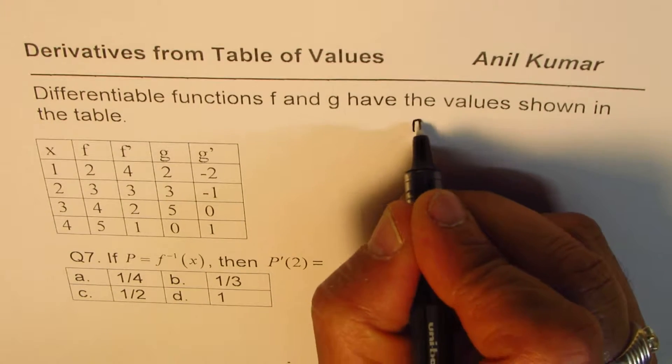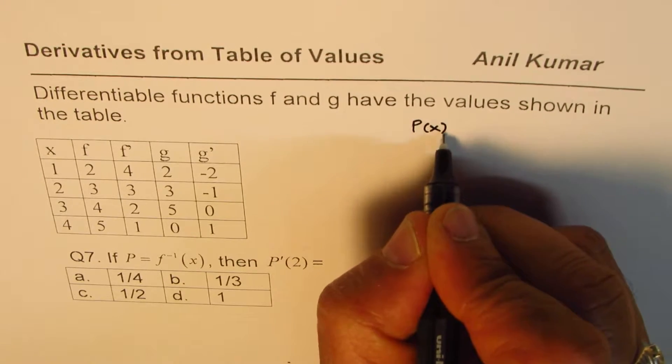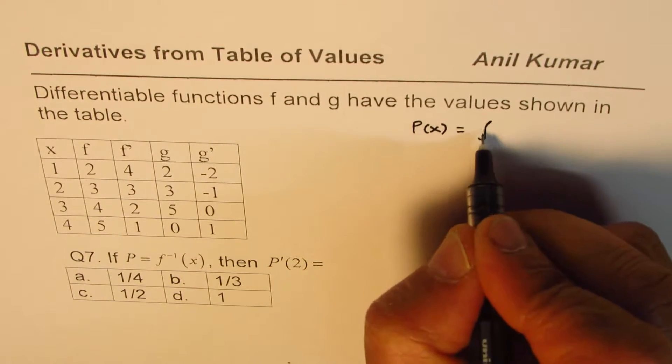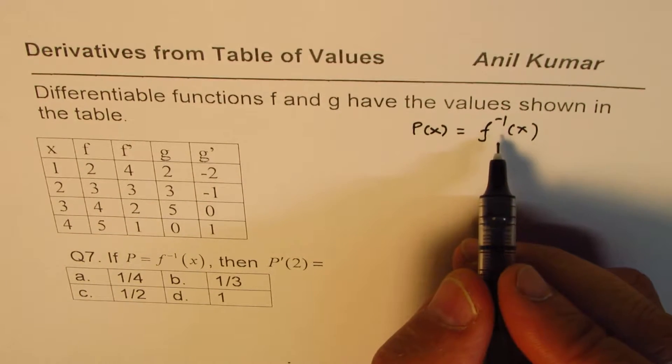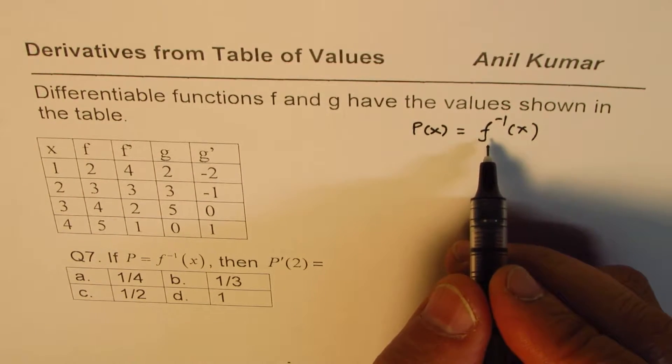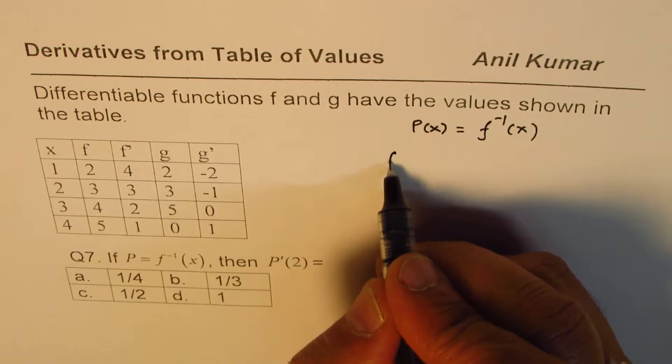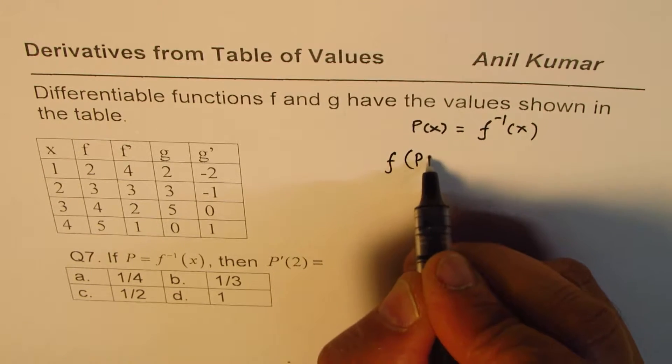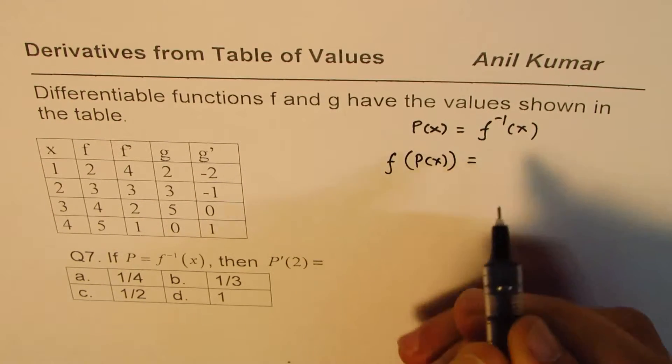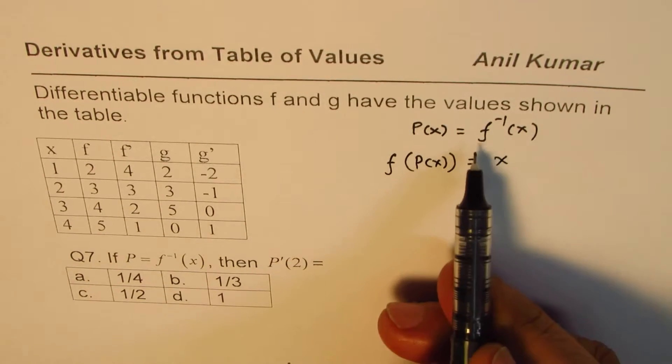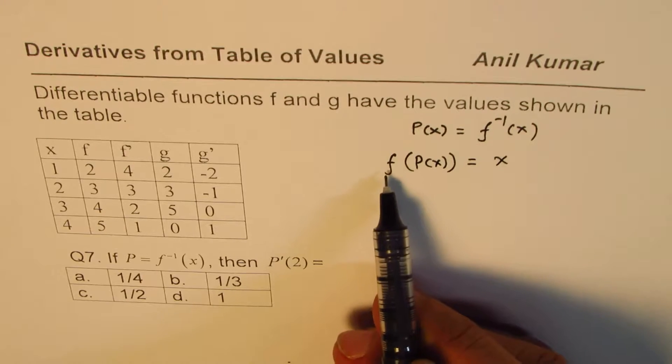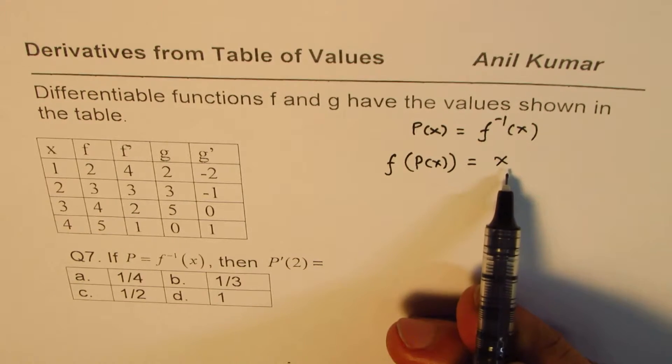Well, we are given p, let me write p of x equals to f inverse of x. So that is the function given to us. We could write this as f of p of x equals to x. So that is how we could write this. f inverse of x is the same as f of p of x equals to x.